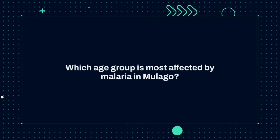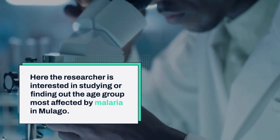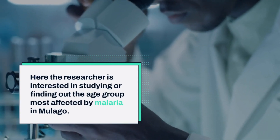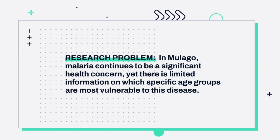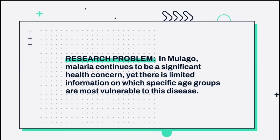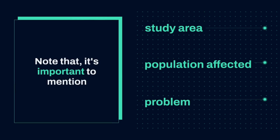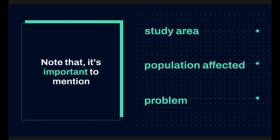Another example: which age group is most affected by malaria in Mulago? The researcher is interested in finding out which age group is mostly affected by malaria in Mulago. We can formulate the research problem as: in Mulago, malaria continues to be a significant health concern, yet there is limited information on which specific age groups are most vulnerable to this disease. Note that it is important to mention the study area, the population affected, and the problem in that study area.